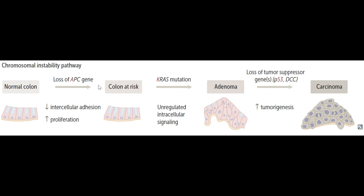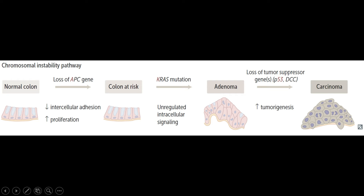I want to circle back on the gene locations because I've seen this on several questions. The APC gene is on chromosome 5. The KRAS gene is on chromosome 12. The P53 gene is on chromosome 17. And the DCC gene is on chromosome 18. Definitely know those — questions will give you the gene and ask where it's located, and it's an easy thing to memorize for quick points.